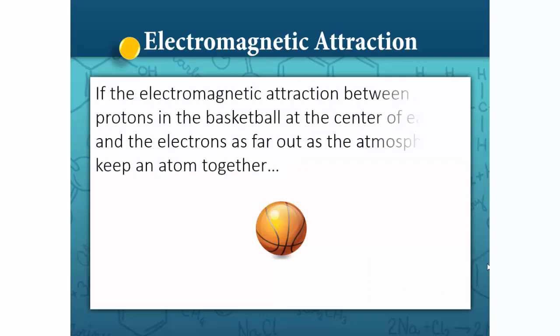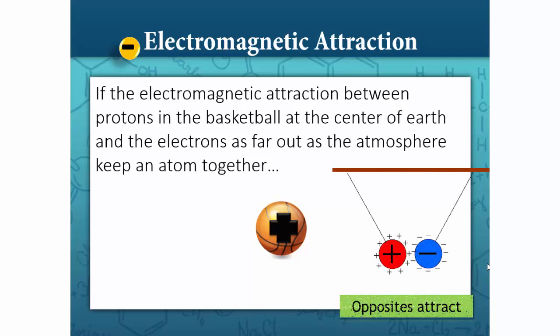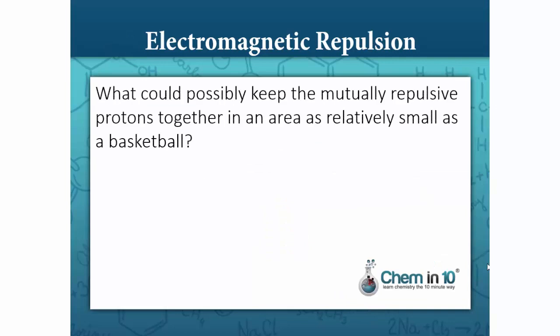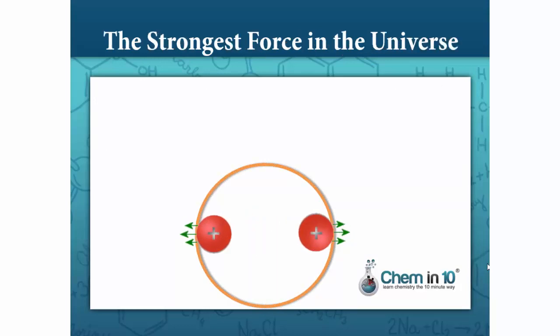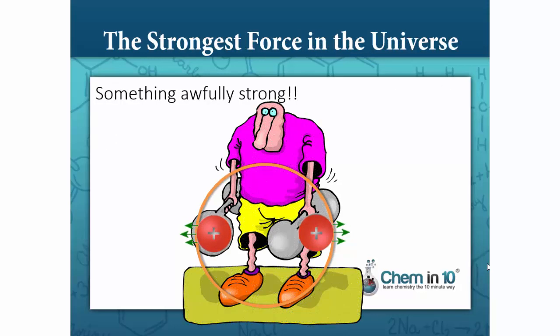If the electromagnetic attraction between protons in the basketball at the center of the Earth and the electrons as far out as the atmosphere keep an atom together, what could possibly keep the mutually repulsive protons together in an area as relatively small as a basketball? Something awfully strong.